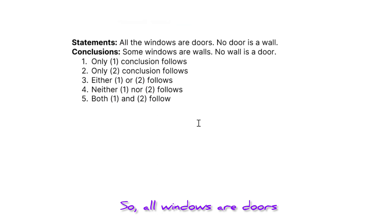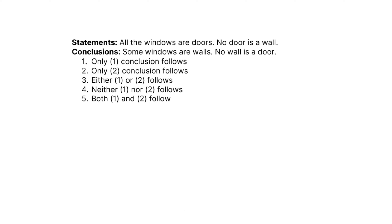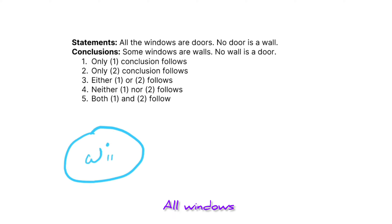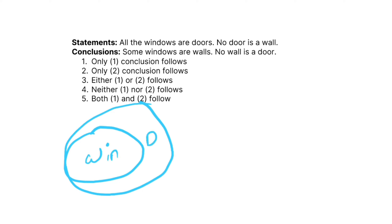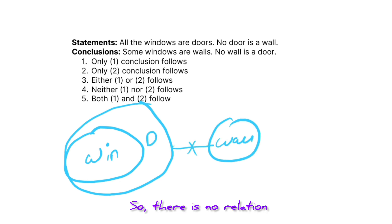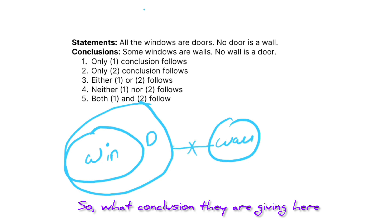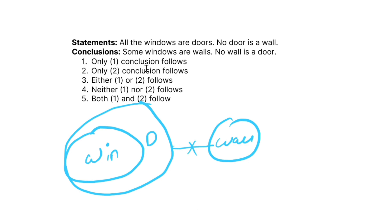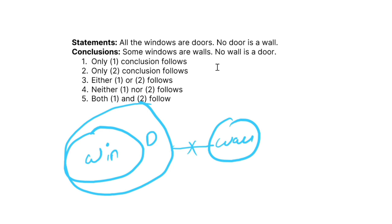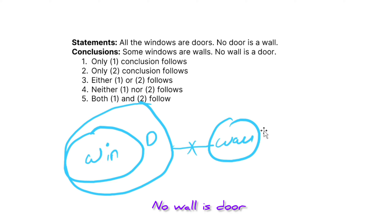Next question: all windows are doors, and no door is a wall. Let's draw the Venn diagram — all windows are inside doors, and no door is a wall, so there is no overlap between doors and walls. Conclusions: some windows are walls — no relation there, so it's incorrect. No wall is a door — that is correct. So only two follows.